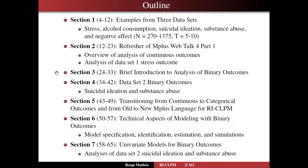In section 3, we turn to the main topic of analysis of binary outcomes, and I will give a brief introduction to the kinds of models we have been using in that area and what we need to extend for modeling panel data. In section 4, I turn to data set 2, which features the binary outcomes of suicidal ideation and substance abuse. In section 5, I turn to transitioning from continuous to categorical outcomes and from old to new M-Plus language for random intercept cross-lag panel modeling, RICLPM.